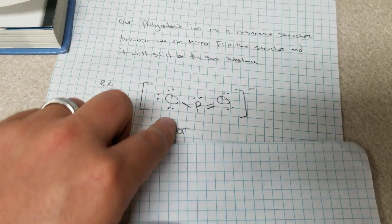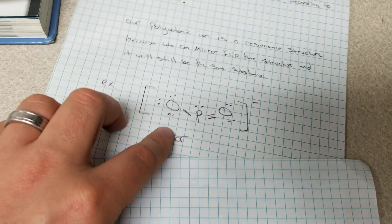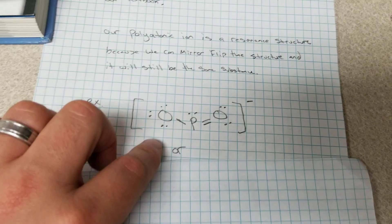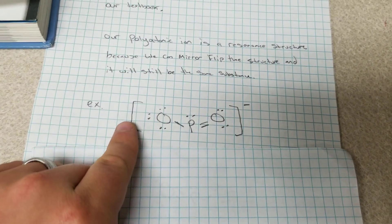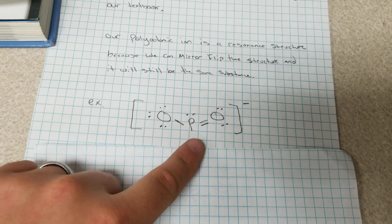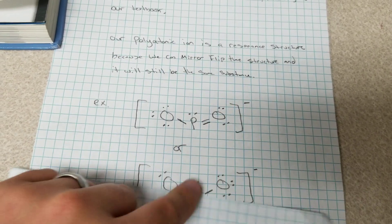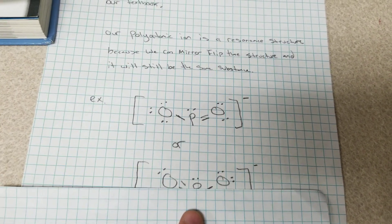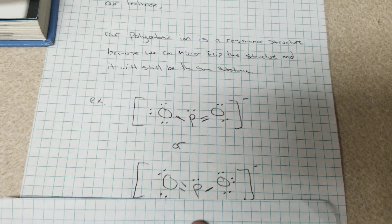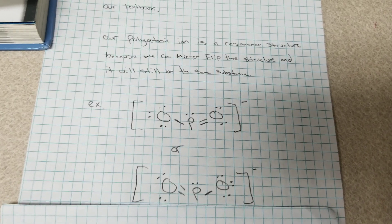And then you write the sketch for resonance structure with these two brackets and we have the negative charge notation. Alright thank you very much.